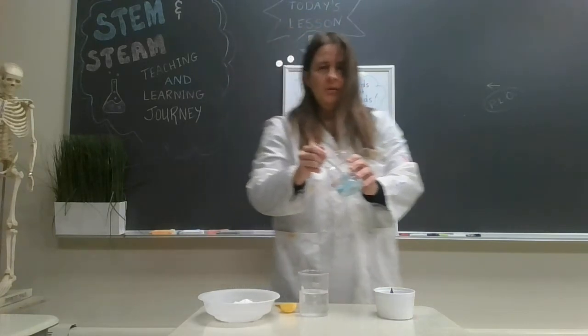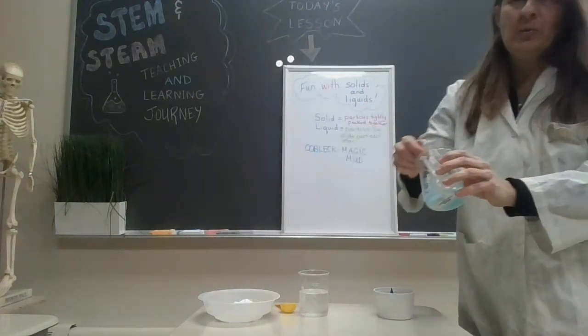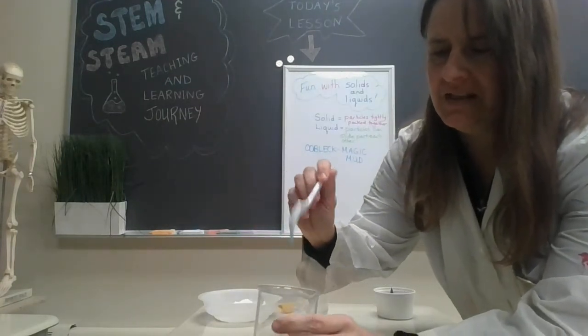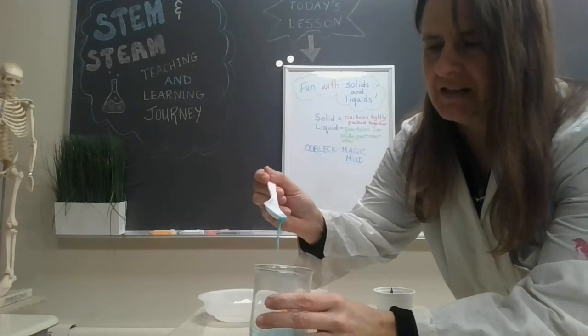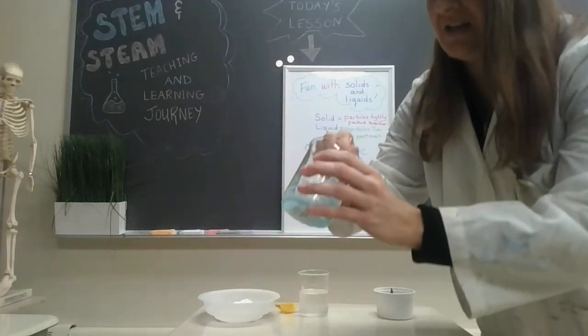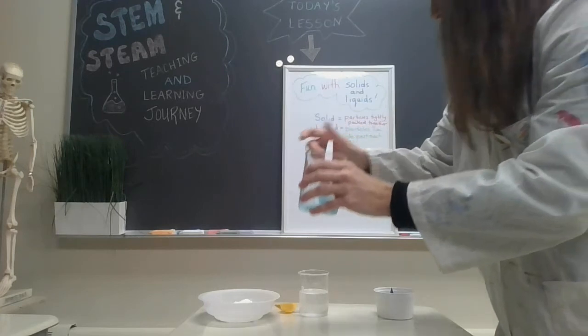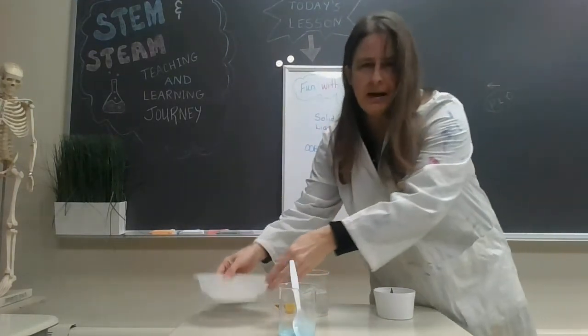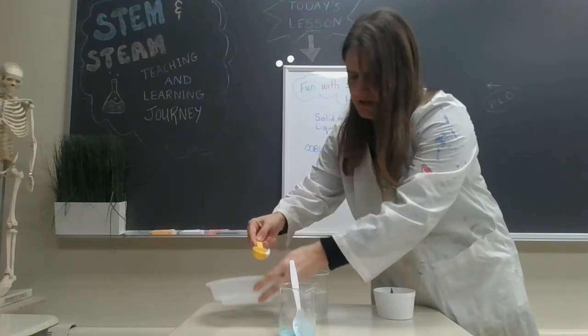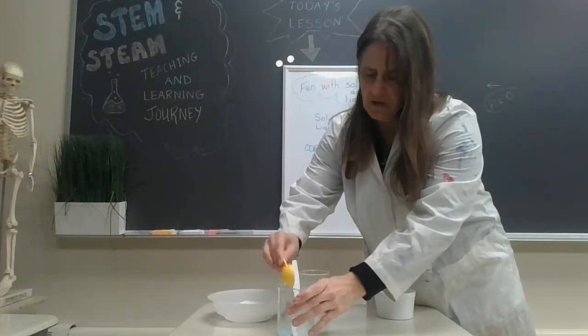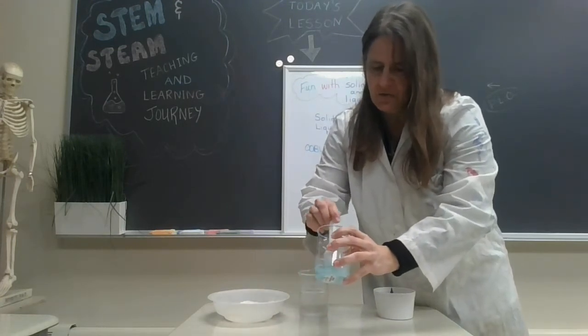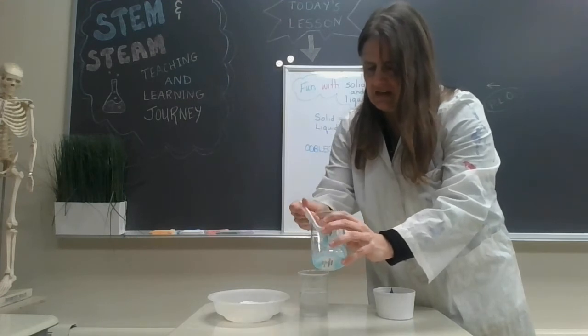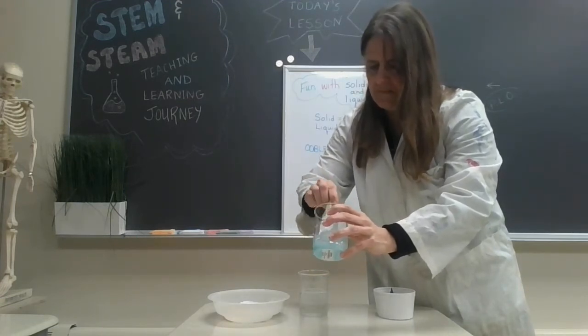So right now the oobleck isn't really ooblecking yet. It's still pretty liquidy, but you can see it's kind of starting to act a little funny. It's starting to thicken up, so I feel like maybe I'm going to add just a little bit more. The kids in my class are all like, 'Mrs. Mills, it's not working, help me, add more.' And you just have to kind of add it in small amounts if you're noticing that it's not doing what you want it to do.